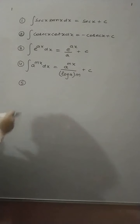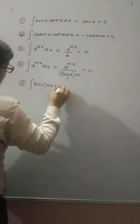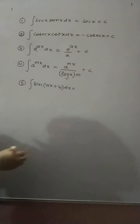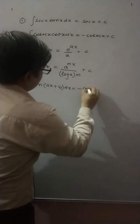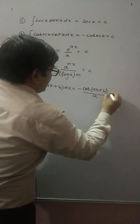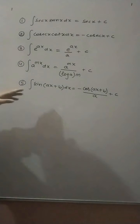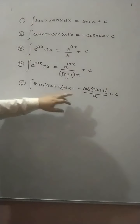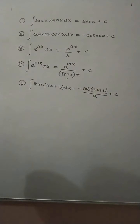Next one is: integration of sin of (ax plus b) dx. As we know that integration of sin x is equal to minus cos x. So, the integral of sin(ax plus b) is minus cos(ax plus b) divided by the derivative of (ax plus b), plus C.